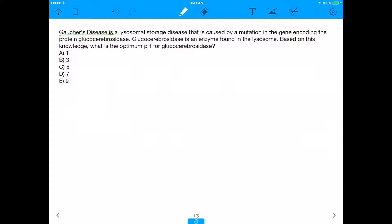It says, Gaucher's disease is a lysosomal storage disease that is caused by a mutation in the gene encoding the protein glucocerebrosidase. Glucocerebrosidase is an enzyme found in the lysosome. Based on this information, what is the optimum pH of glucocerebrosidase?